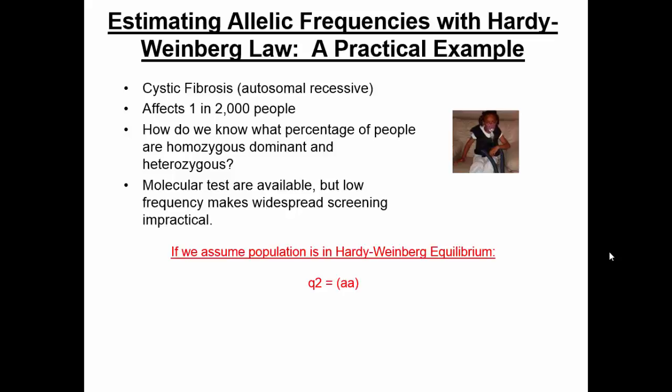Let's use the information at hand. Assume we have a population that's in Hardy-Weinberg equilibrium. Q squared represents the homozygous recessive genotype (little a, little a). If we want to figure out the frequency of the recessive allele Q, we take the square root of the frequency of AA. So if we take 1 divided by 2,000, that's 0.0005. The square root of that is 0.02, and that is Q.